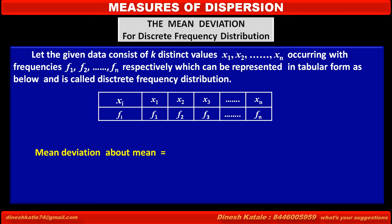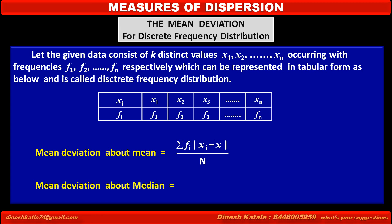Therefore, mean deviation about mean is equal to summation of fi into |xi minus x-bar| upon n number of observations. Mean deviation about median is equal to summation of fi into |xi minus m| upon n number of observations.